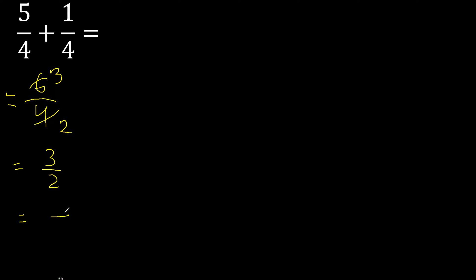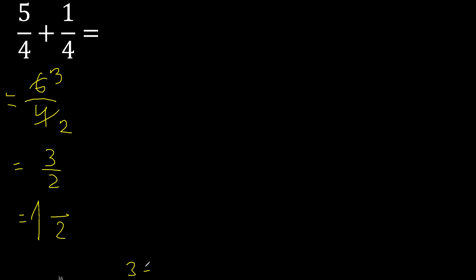Therefore the same number here. 2 multiplied by which number is nearest to 3 but not greater? 2 multiplied by 2 is 4 — 4 is greater. So multiplied by 1: 2 multiplied by 1 is 2. 2 is not greater. 3 minus 2 is 1. The remainder is 1.